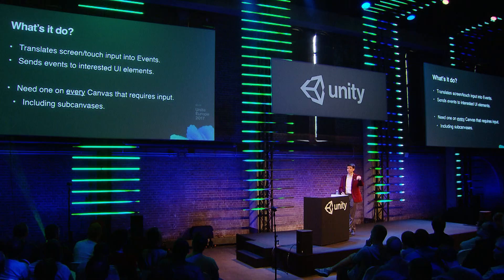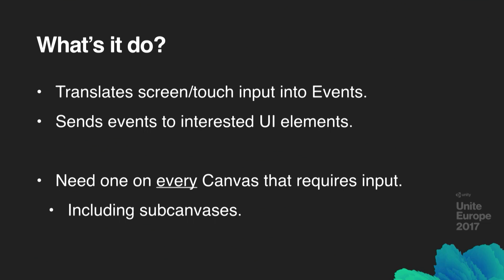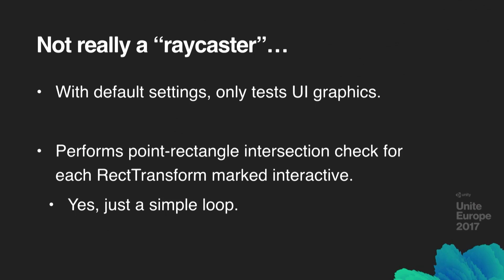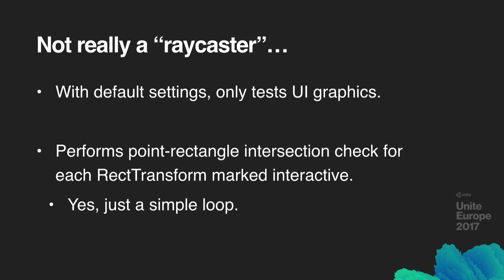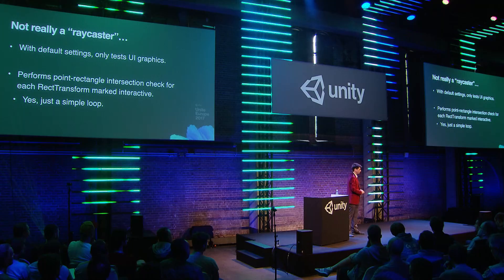Now I'm going to talk about the Graphic Raycaster. This is the component that translates your input into UI events — it takes mouse or touch input and translates them into things like MouseEnter events and PointerClick events, sending them to interested UI elements on the canvas. Note that you require one of these on every canvas that requires input, even sub-canvases. Despite its name, the Graphic Raycaster is not really a ray caster. What it actually does is take the set of UI elements interested in receiving input and perform point-rectangle intersection checks — it takes the input point and says, is this inside the RectTransform of this UI element? If so, it dispatches the UI event.